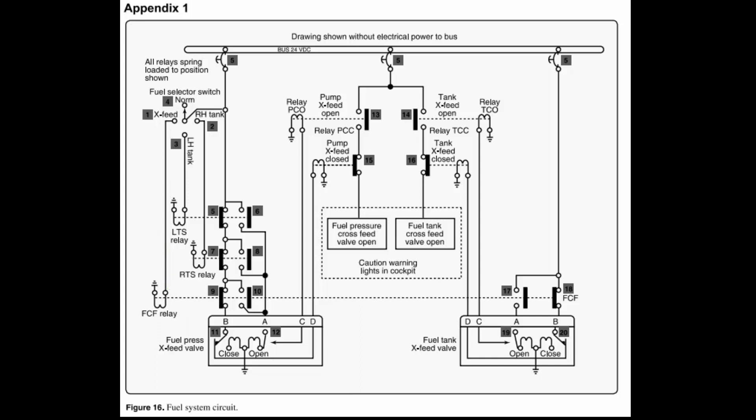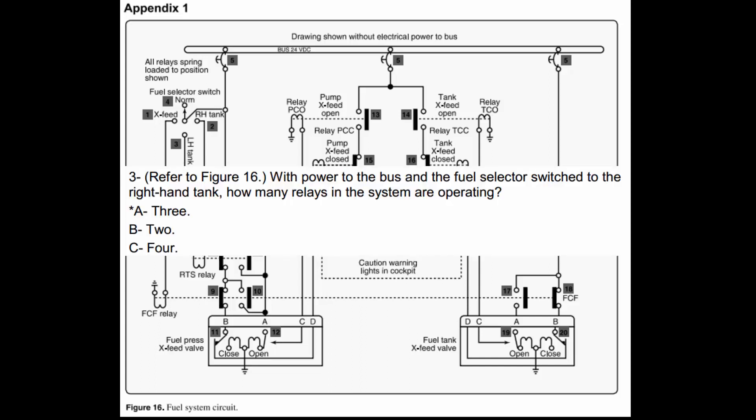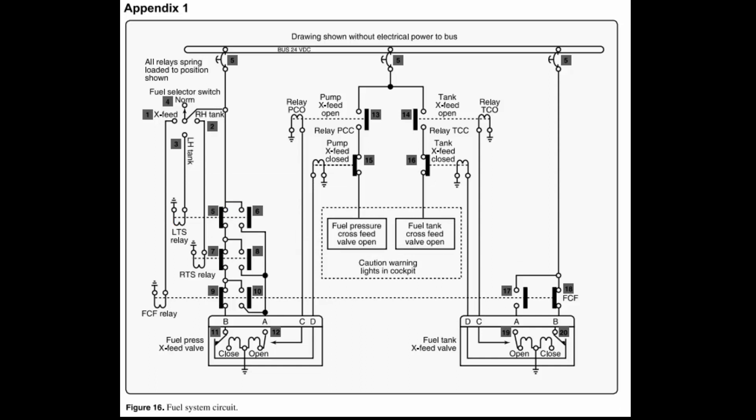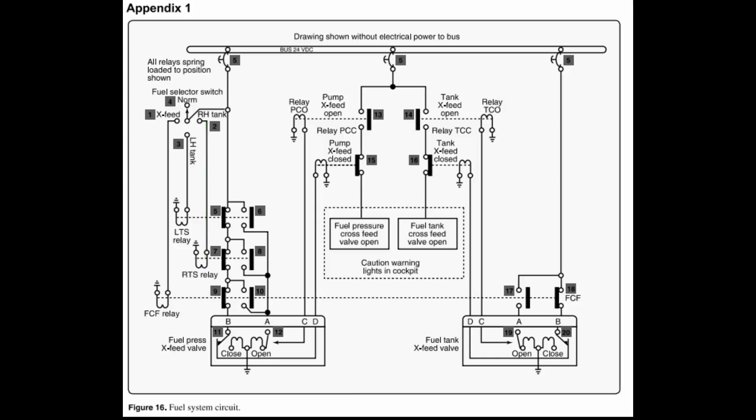One more question — question three. With power to the bus and the fuel selector switched to the right-hand tank, how many relays in the system are operating? They're probably going to try to trick us because we've got three parallel circuits. Going down through the right-hand tank, we've got the RTS relay — that's one. Then we zigzag power through 5, through 8, down to pin A, which opens the cross-feed valve. When it gets to the end of its travel, it applies power to C, which is the PCO open — that's our second one.